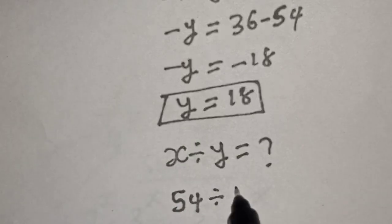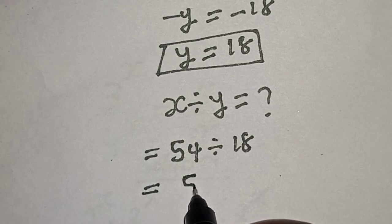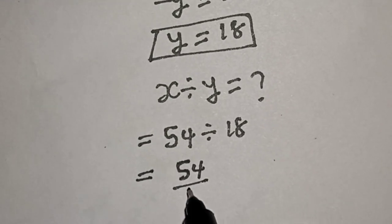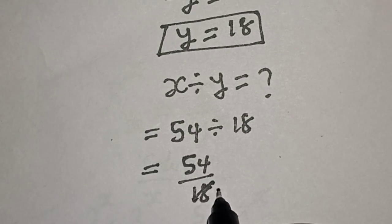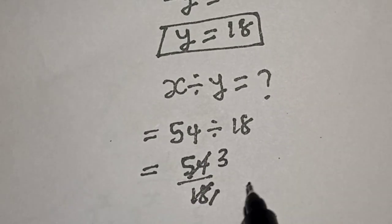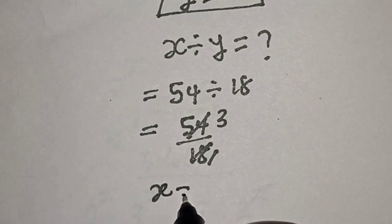and y is 18. This equals 54 over 18. 18 divides into 54 three times. So x divided by y